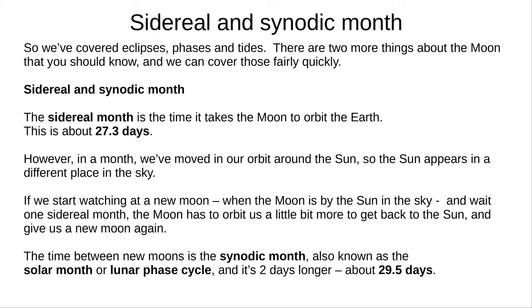The sidereal month is the time it takes the Moon to complete one orbit of the Earth. This is about 27.3 days, and is the same time the Moon takes to rotate once.